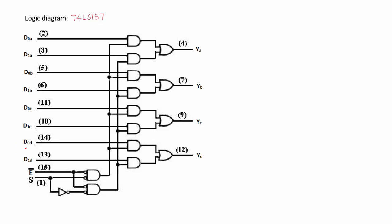There are two data lines for each of the multiplexers A, B, C and D. S passes through a NOT gate to produce S-bar. The output of one NAND gate is E·S and the output of the other NAND gate is E·S-bar. Both outputs are given to an OR gate, so YA will be D0A·E·S-bar + D1A·E·S. Similarly, the outputs of the corresponding NAND gates for multiplexer B are E·S-bar and E·S, giving YB.